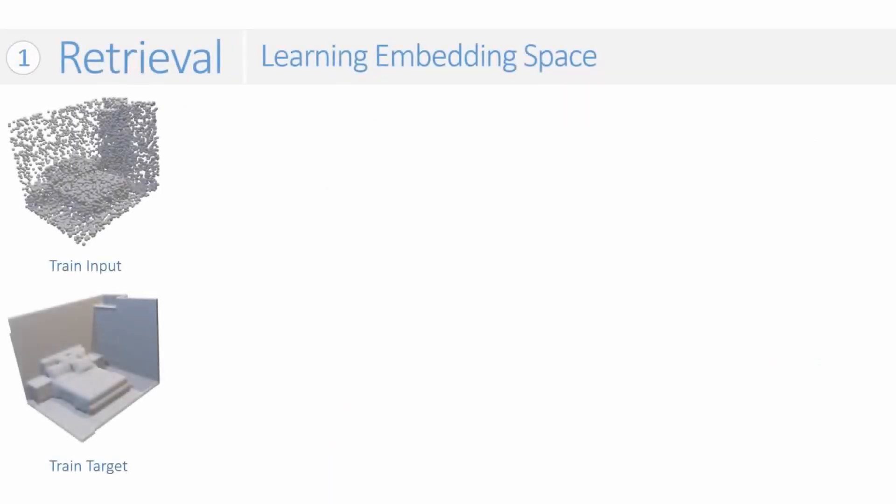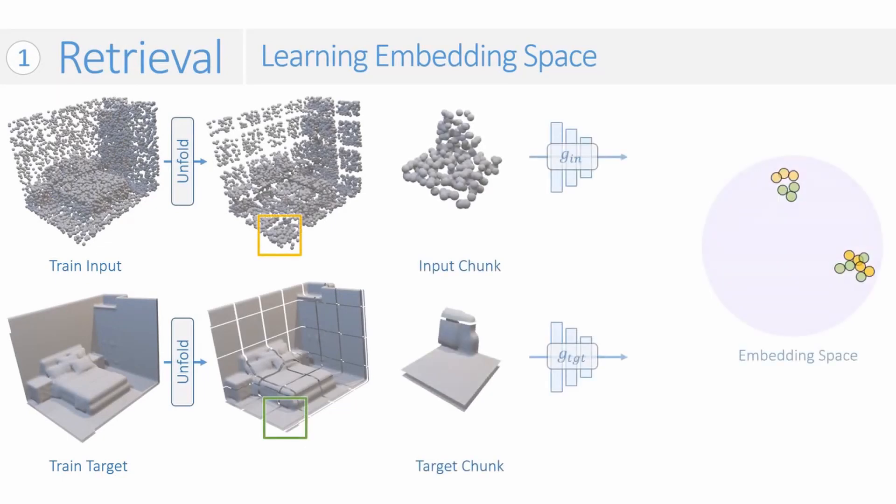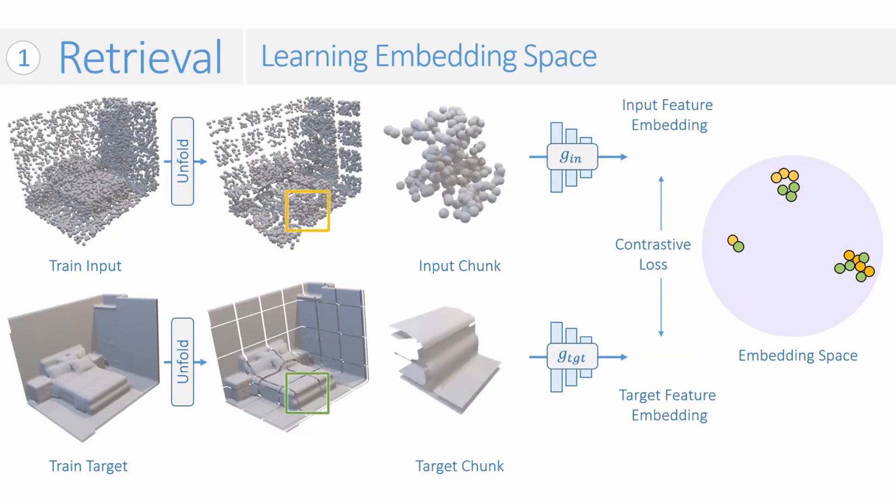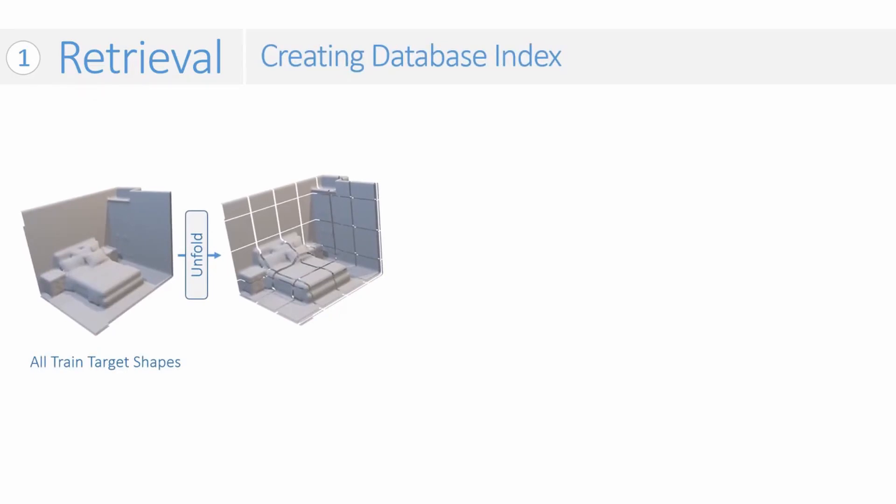To enable retrieval-based approximate reconstructions, we learn to embed chunks in the input and target domains to a shared embedding space such that input and target chunks with similar geometry lie closer in this space. Once trained, we use the embeddings of the train set chunks to index our database, which contains all volumetric chunks present in the train set.